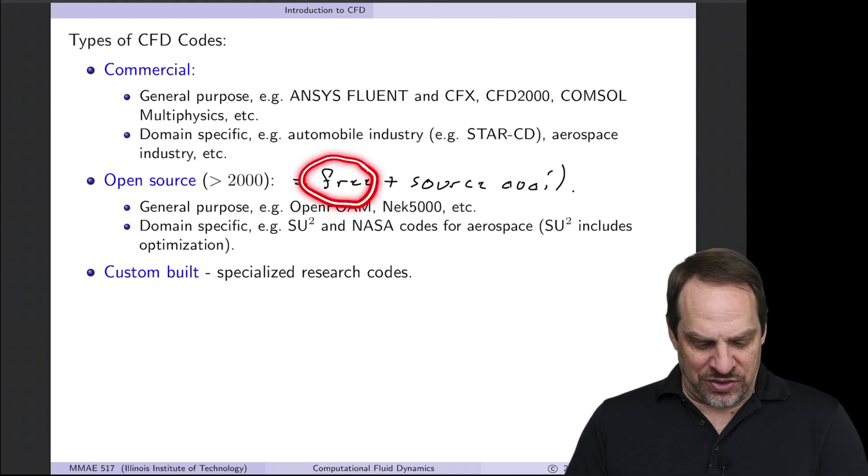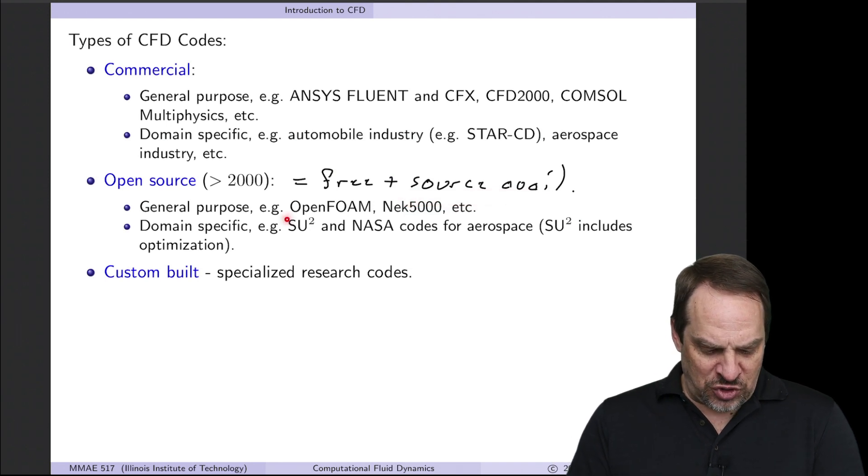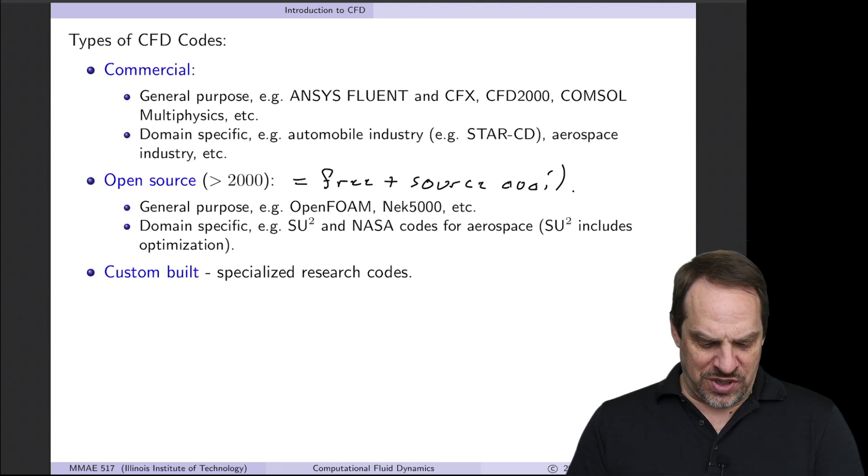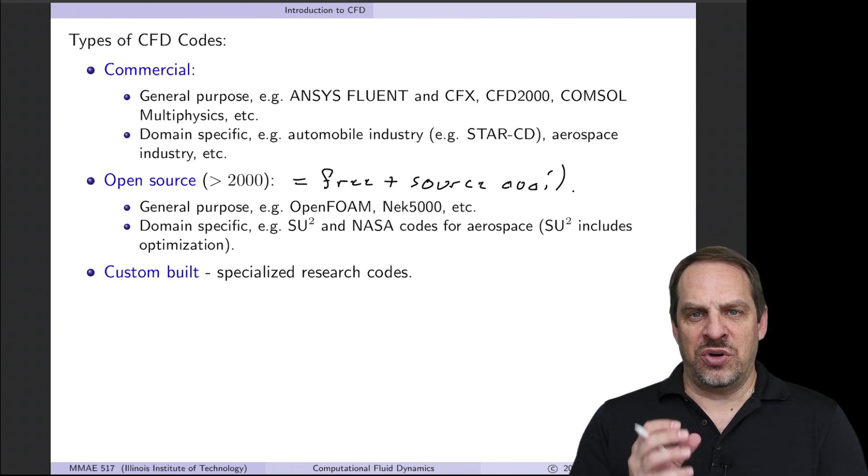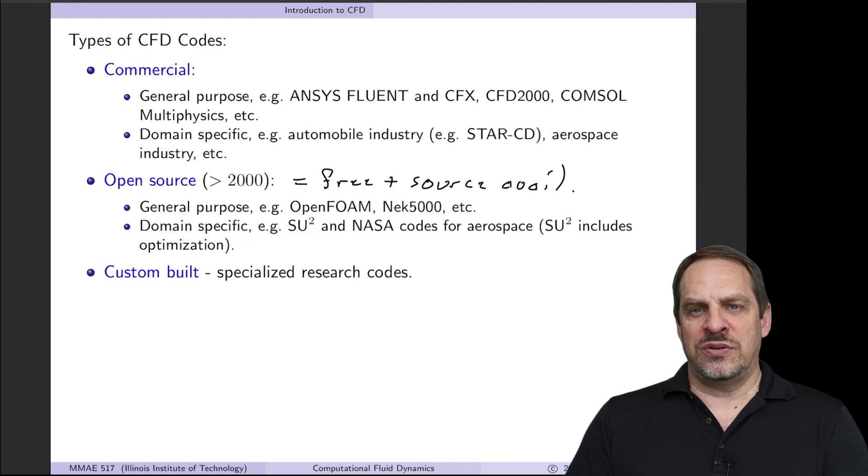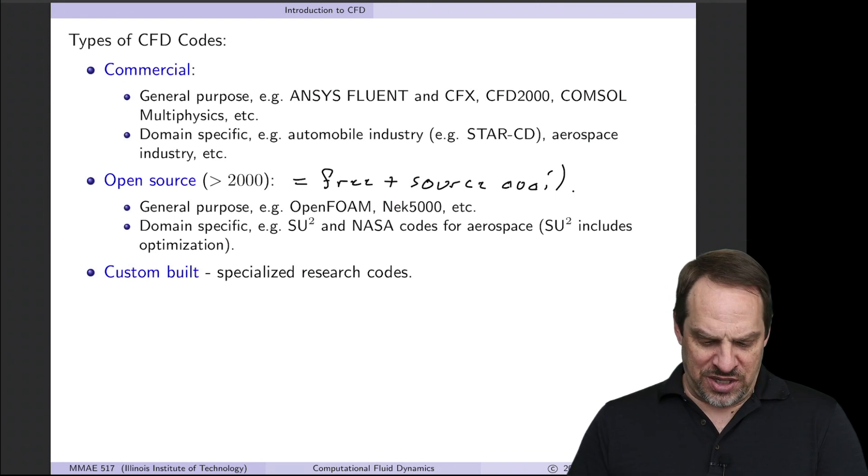The big plus we normally think about is the fact that they're freely available. You can just download it off the web. But the main reason it started was because the source code itself was available. In fluid mechanics, OpenFOAM is a very popular open source general purpose code, very similar to ANSYS Fluent in terms of its capabilities. They both use finite volume methods. NEC 5000 was developed outside Chicago at Argonne National Lab. It's more of a research type code, but very comprehensive and can be used for general purpose settings. Domain specific codes: SU squared is developed at Stanford University. NASA has its own open source codes for aerospace applications, turbo machinery applications, and so on.